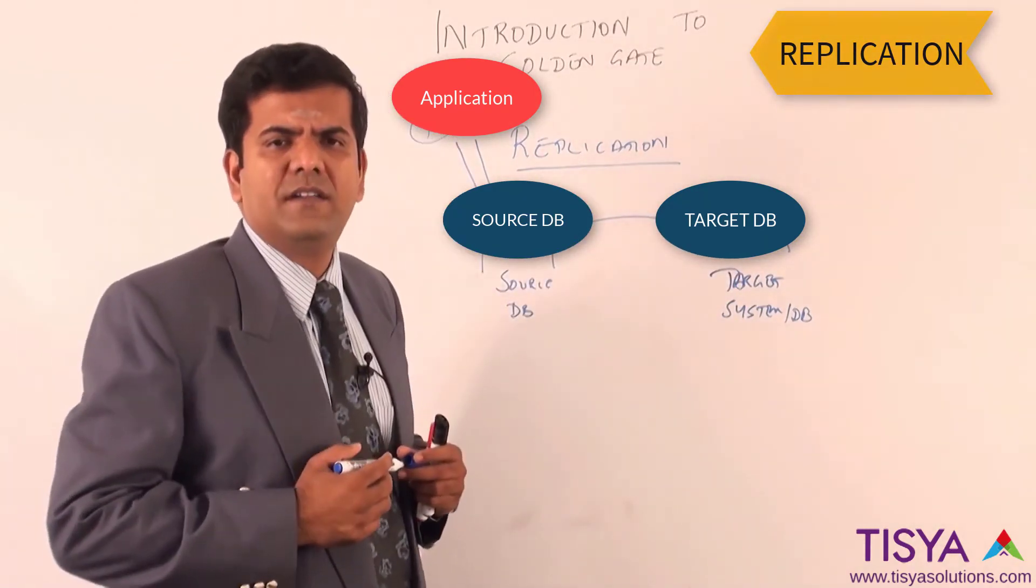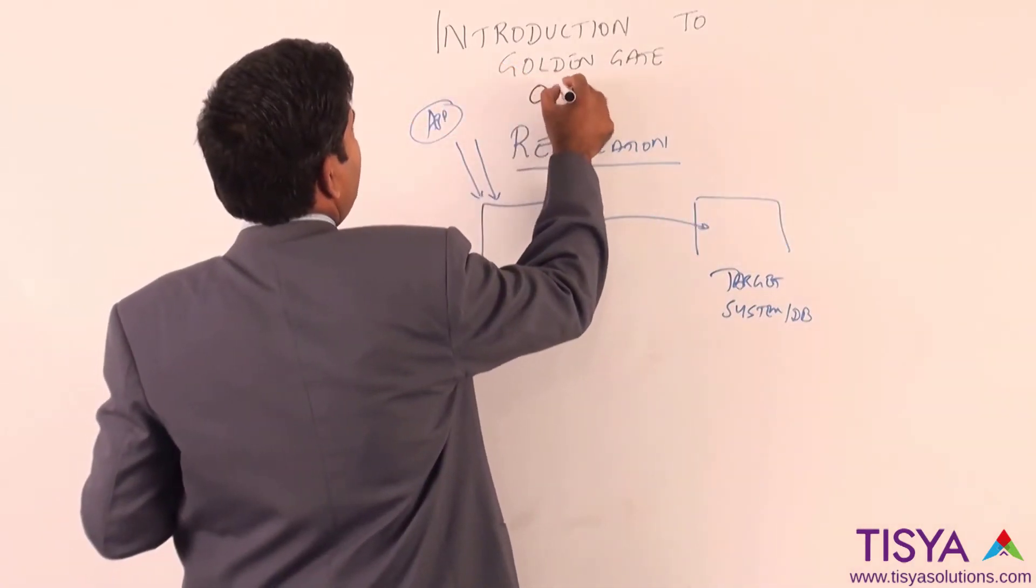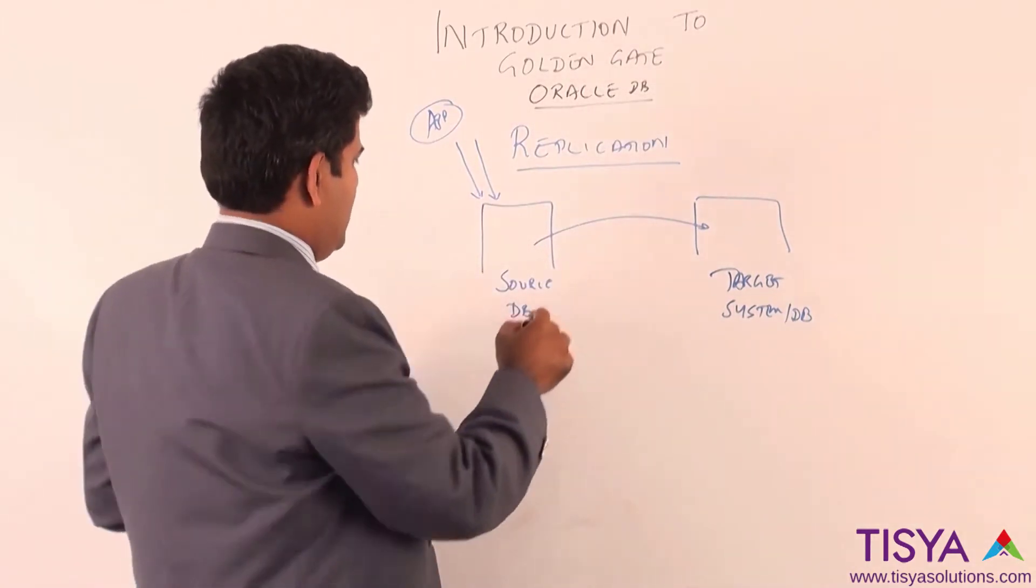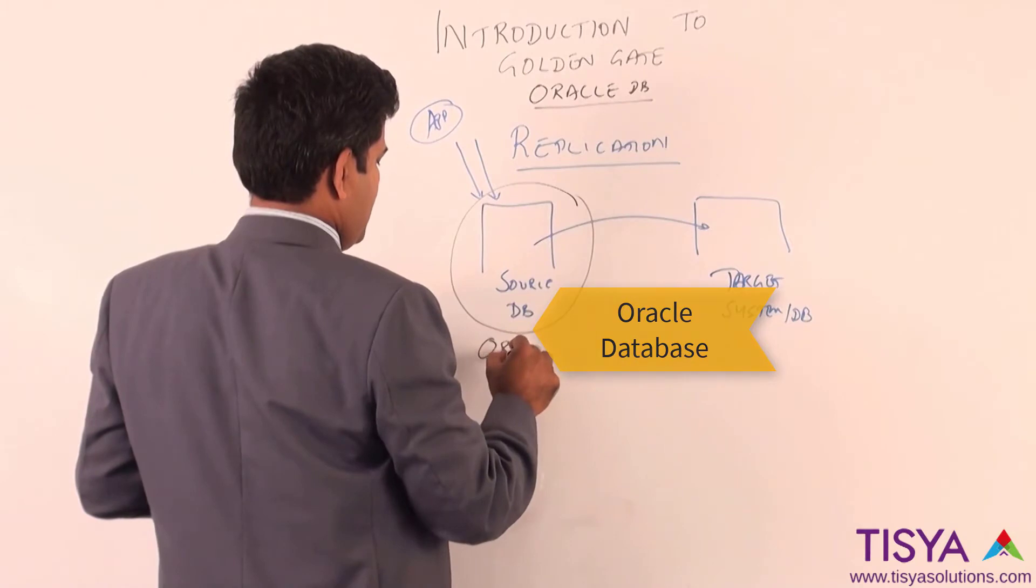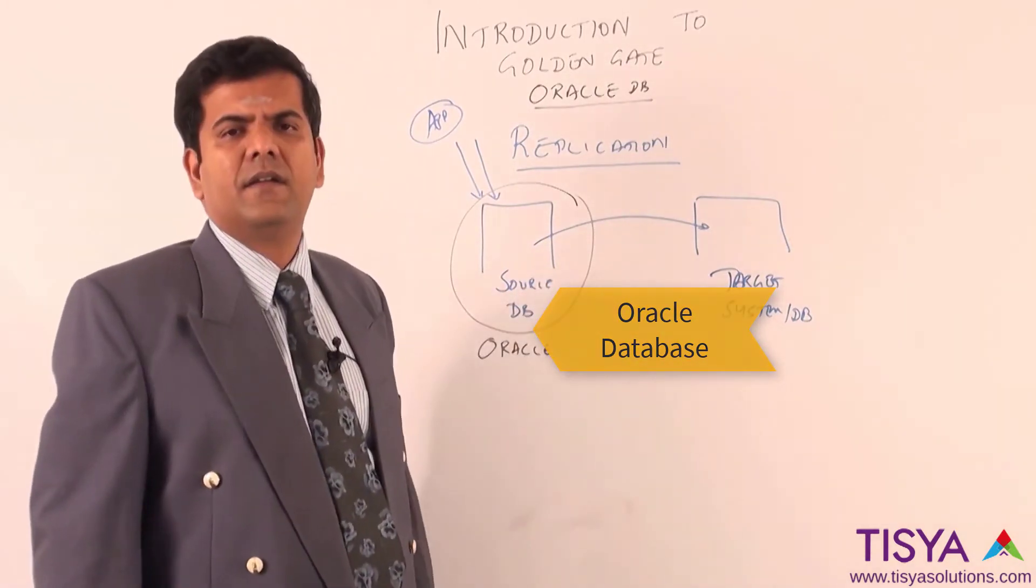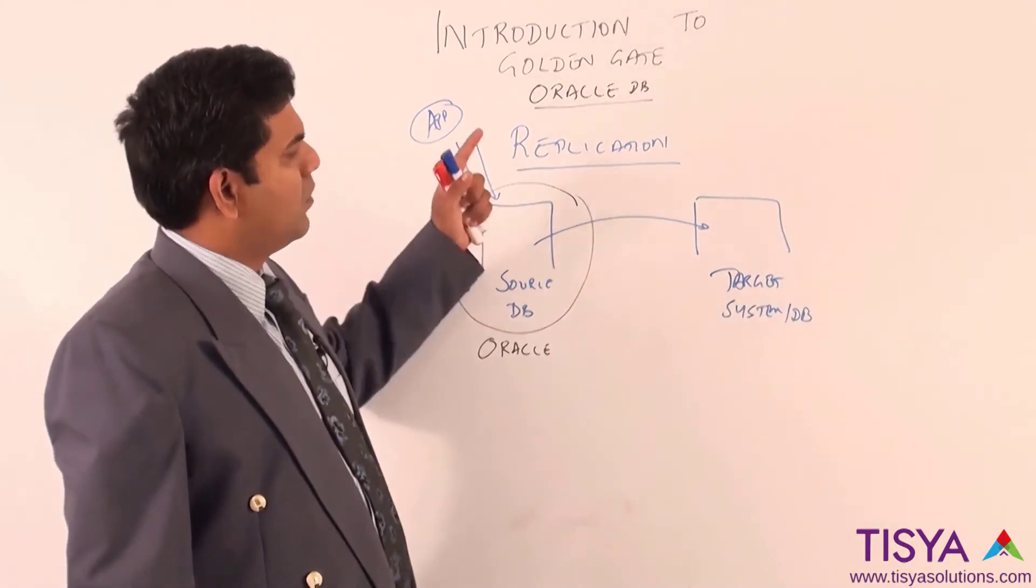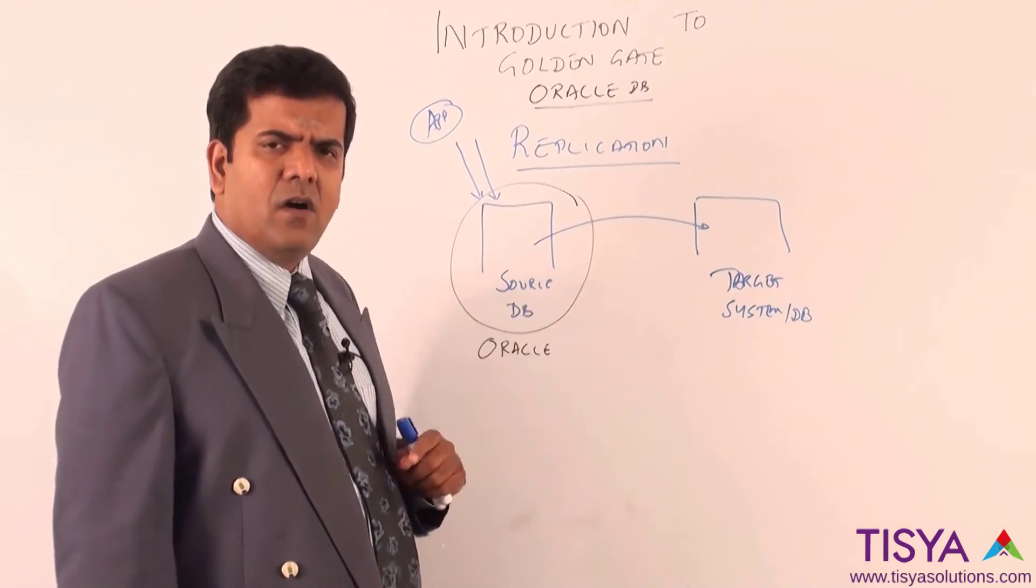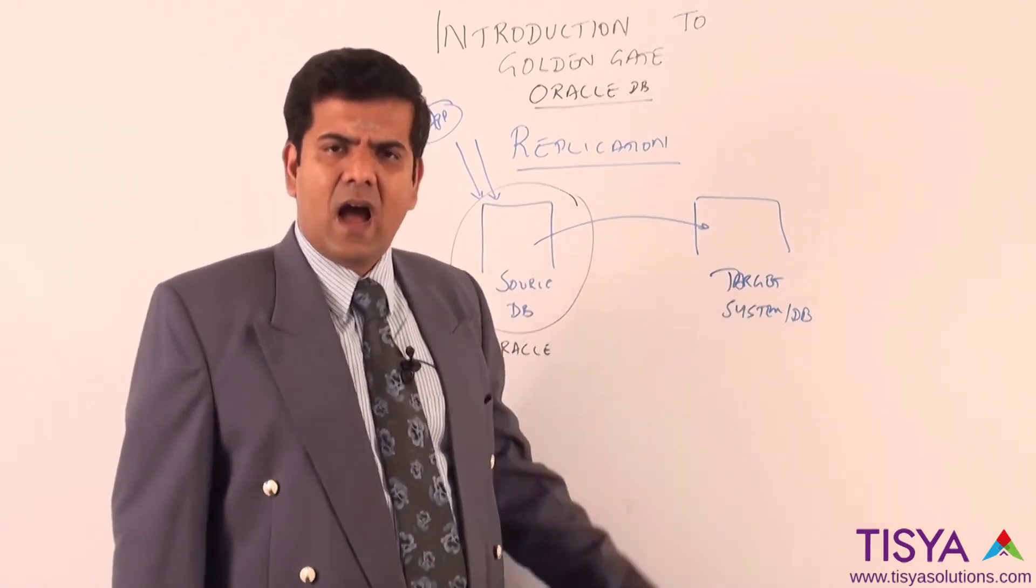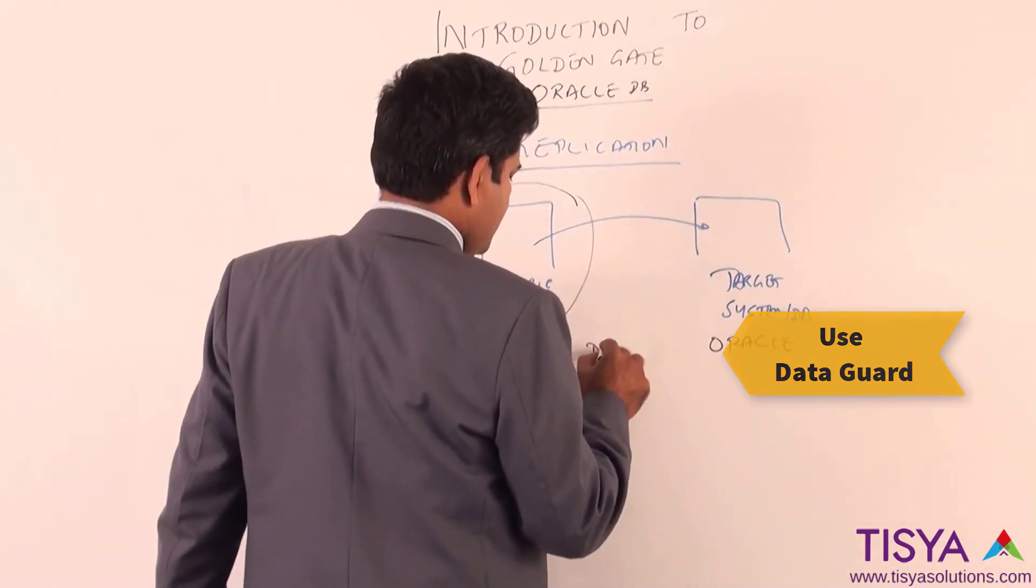Golden Gate also provides the same replication feature. We will specifically talk about Golden Gate for Oracle databases, wherein the source is Oracle and we have to read and apply replication into another database. The crux of this is that, according to Oracle's standpoint, if your source and target are both Oracle databases, then use Data Guard.